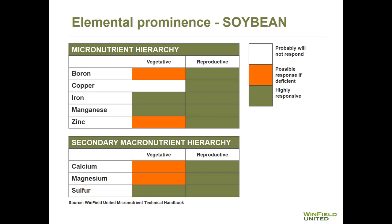Similarly for soybean, we have growth stages broken into vegetative and reproductive categories. For the micronutrients — boron, copper, iron, manganese, and zinc — looking at the vegetative growth stage of soybean, it's only iron and manganese where we see highly responsive criteria. Whereas for all five micronutrients, we have a high probability of response during the reproductive period when those flowers and pods are beginning to develop.